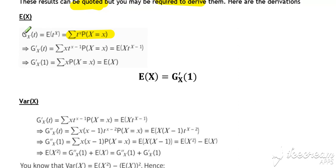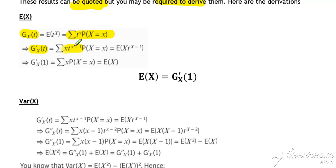The probability generating function is defined as the sum of probabilities multiplied by t to the x. If we differentiate that expression, we apply a simple differentiation rule: multiply by the existing power and reduce the power by 1 on each of the t to the x values. Our coefficients remain unchanged.